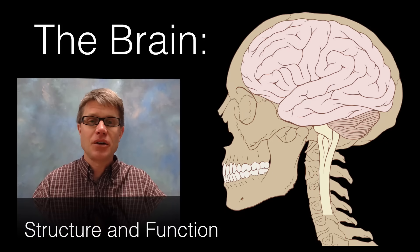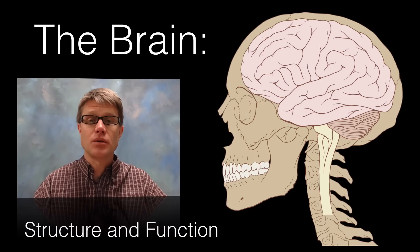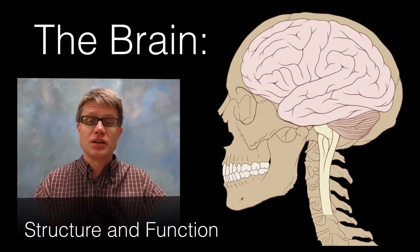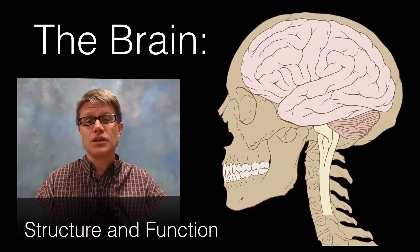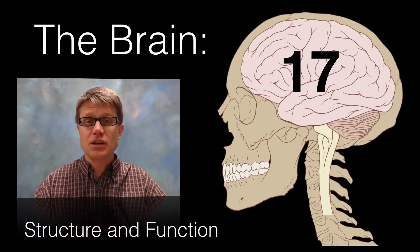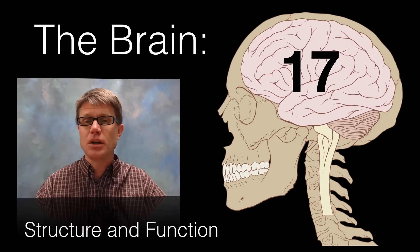Hi, it's Mr. Andersen and in this video I'm going to talk about the brain — structure and function. Remember, structure is what it's made up of, and function is what it does. We sometimes refer to this as the anatomy or structure, and the physiology or the function. We're going to go through 17 different structures in the brain, and by the end you should be able to tell me what their structure is and what their function is.